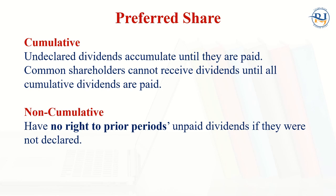The second type is non-cumulative. Non-cumulative holders have no right to prior period dividends — even if the dividend was not declared last year, they cannot ask for it. That right belongs to the cumulative preferred shareholder, not to the non-cumulative preferred shareholder. So non-cumulative shareholders have no right to prior period or unpaid dividends if they were not declared.